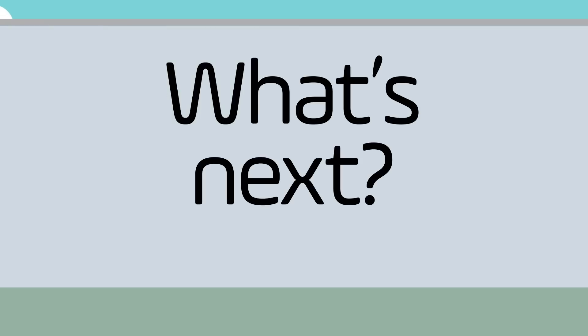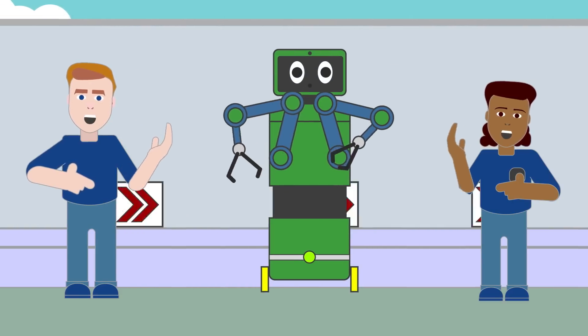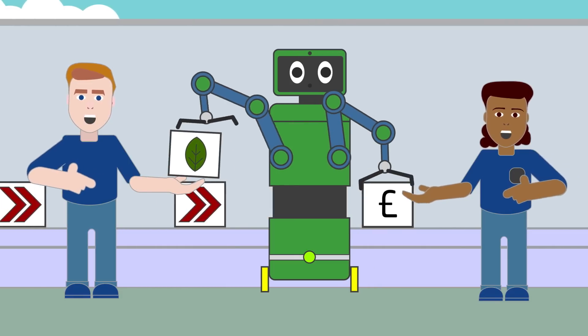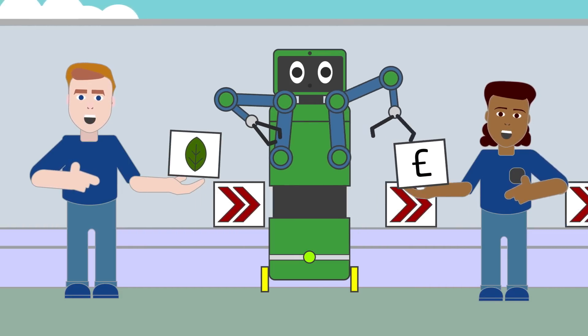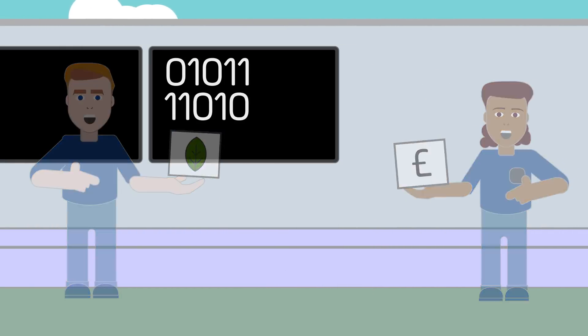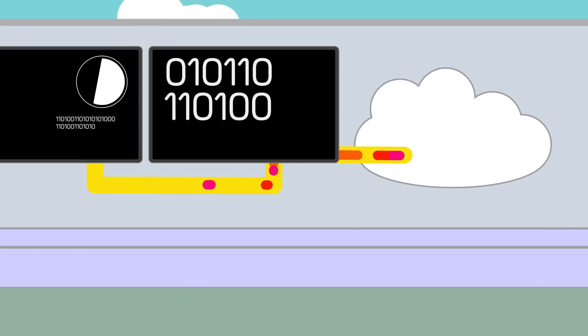Will robots take over manufacturing entirely? We think that robots and automated systems will be used to help humans manufacture things faster, greener, and more cheaply than before. Digital manufacturing should be about people first, and robots and automated systems should help them get their work done.